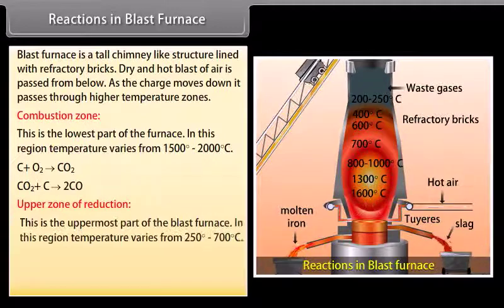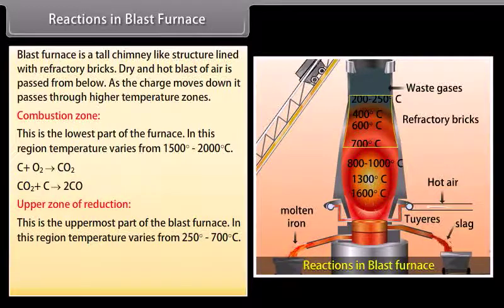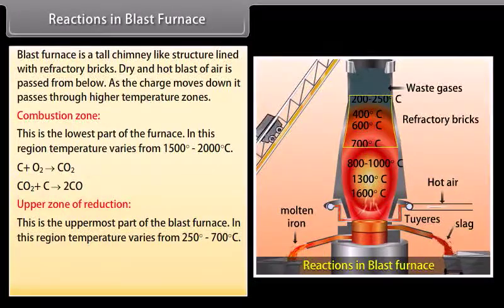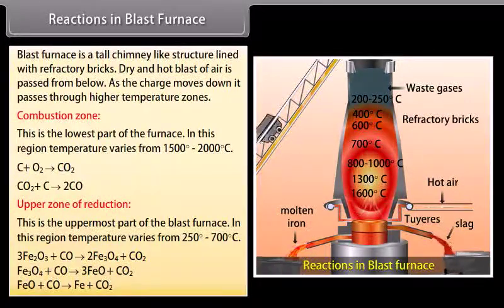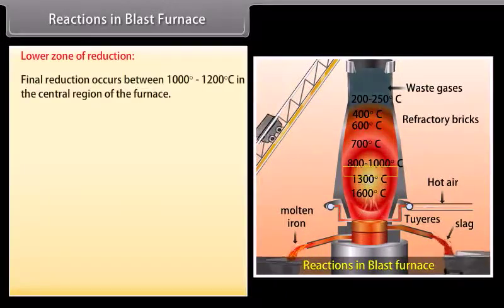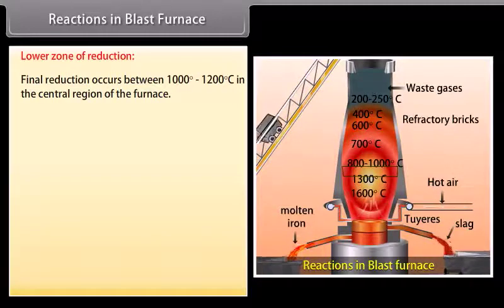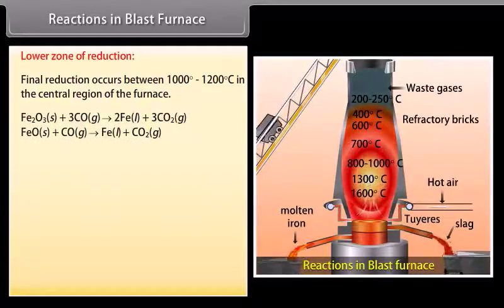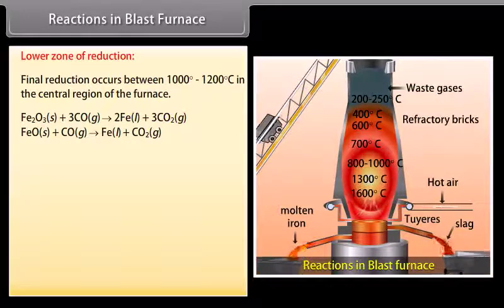Upper zone of reduction. This is the uppermost part of the blast furnace. In this region, temperature varies from 250 degree to 700 degree Celsius. Here, carbon monoxide reduces oxides of iron into spongy iron. Lower zone of reduction: Final reduction occurs between 1000 degree to 1200 degree Celsius in the central region of the furnace. Carbon obtained by dissociation of carbon monoxide combines with iron and impurities also get dissolved in molten iron.